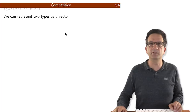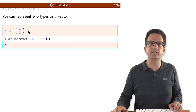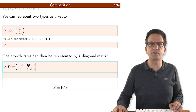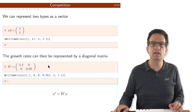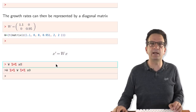We can represent more than one type as a vector in a population. X is now a vector — we have one of type 1 and one of type 2. When X is a vector, we can represent the growth as a diagonal matrix W. Here I'm taking growth rates 1.1 and 0.95. We go from one time step to the next by taking X prime equal to W times X, matrix multiplication. Multiplying W times X gives us 1.1 and 0.95.